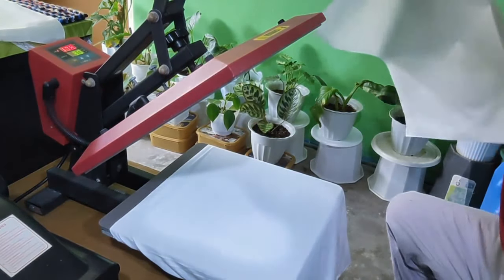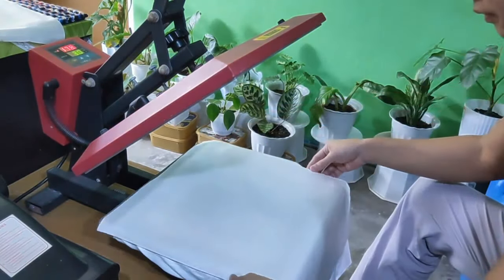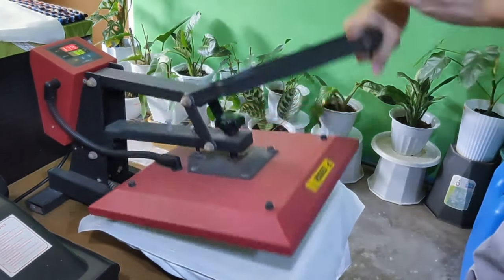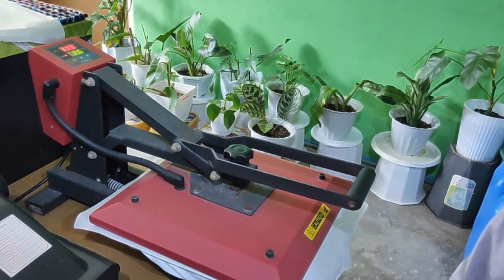Another thing we need is a teflon sheet. The purpose of this is for the paint not to stick onto the hot metal surface of the machine or the iron. Without this, it's impossible to heat press or iron your clothes.